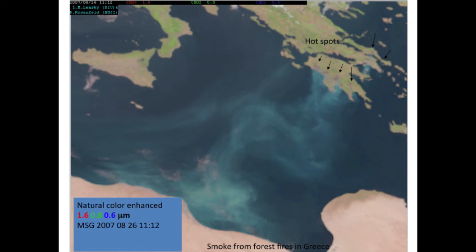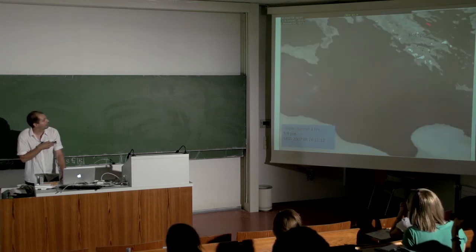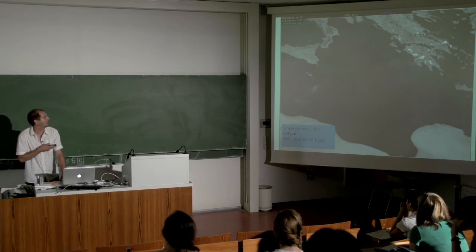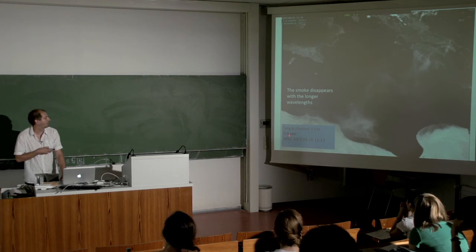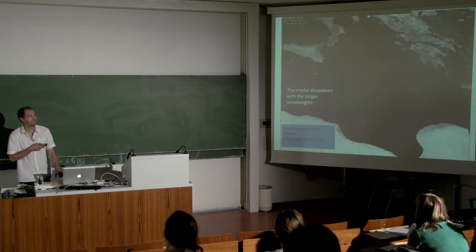This next section, courtesy of Daniel Rosenfeld, illustrates how particle size comes into this. Looking at satellite data over Italy and Greece — there are forest fires with hot spots visible. In the RGB composite you see smoke. Looking at the 3.9 micrometer channel you very clearly see the forest fires as hot spots, but nothing in the clouds. Going from 0.6 micrometers towards longer wavelengths, the smoke signal completely disappears — it's purely a size effect.